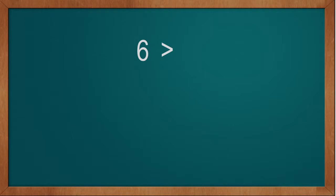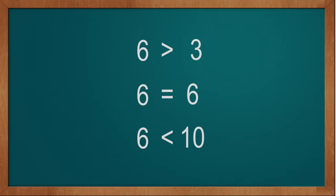In the last three examples, we have seen and compared 6 with three other values. We have seen 6 is greater than 3. We have also seen 6 is equal to 6, and 6 is less than 10. This way we have compared 6 with three other values and seen its comparison.